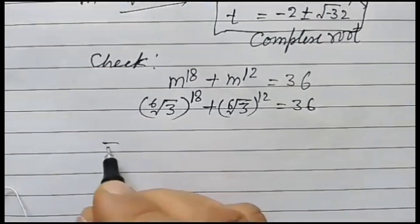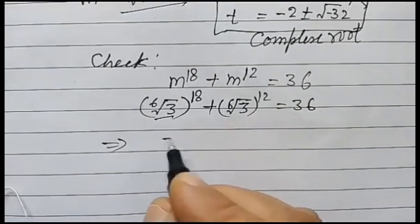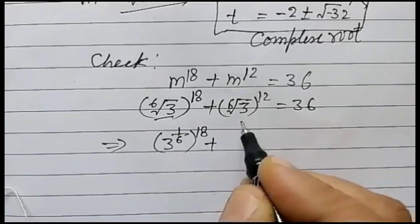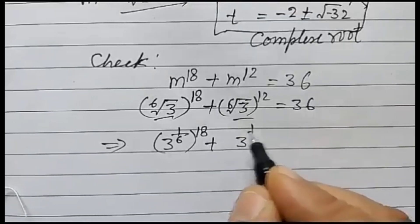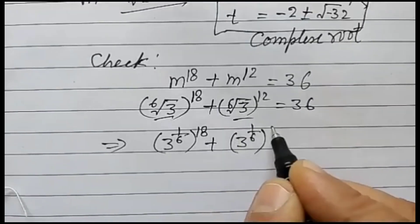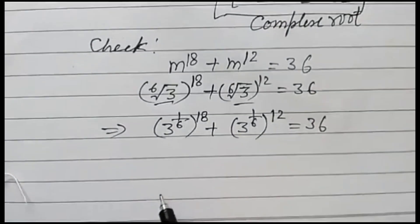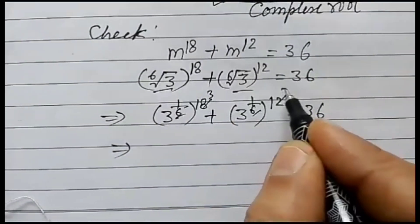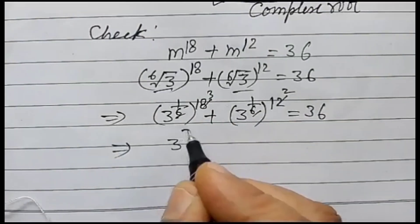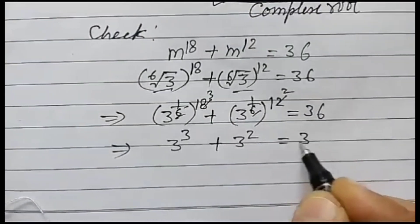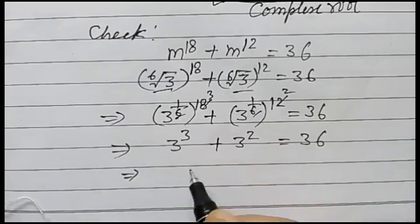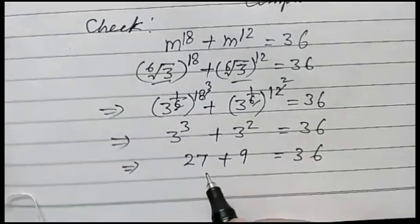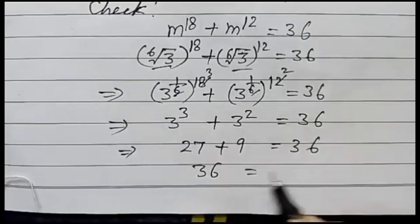This can be written as 3 to the power 1 over 6, whole to the power 18, plus 3 to the power 1 over 6, whole to the power 12. Simplifying: 3 cubed plus 3 squared equals 36. So 27 plus 9 equals 36, and 36 equals 36. Verified!